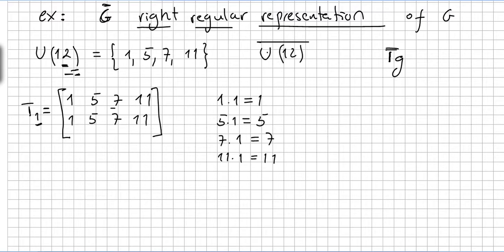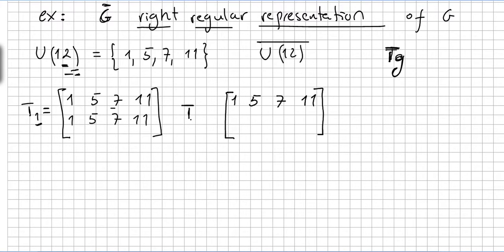So I'm building now U12-bar through the right regular representation, that is the right regular representation through this T_g. The transformation through element 1 was really easy — we got exactly the same. I also remind that this example is good for those in the proof who were a bit skeptical why the transformation of G was a permutation. Now you get the answer through this example. Now I'm going to do the transformation T5 of 1, 5, 7, and 11.